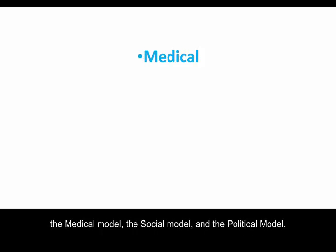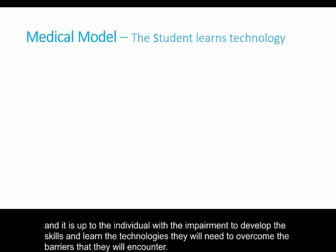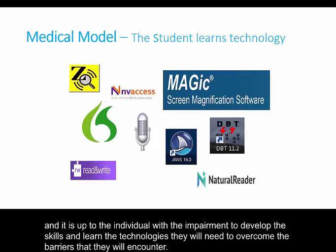So where does the responsibility lie in creating these three levels of accessibility for a given set of materials? A quick look at three models of disability can help sort this out: the medical model, the social model, and the political model. First, the medical model. People who use the medical model, a more traditional model of disability, might say that an individual is disabled by an impairment, and it is up to the individual with the impairment to develop the skills and learn the technologies they will need to overcome the barriers that they will encounter.